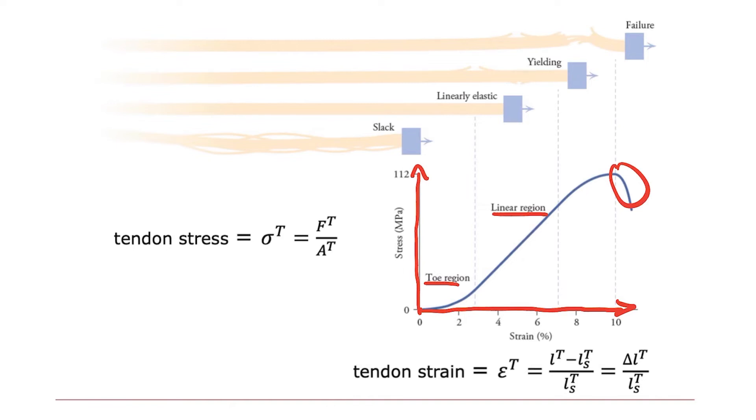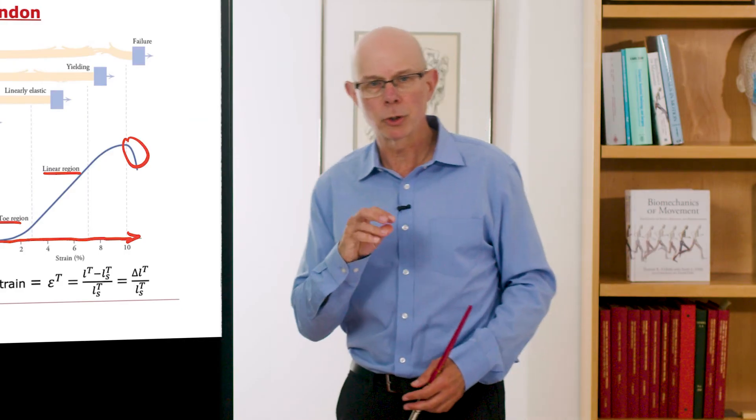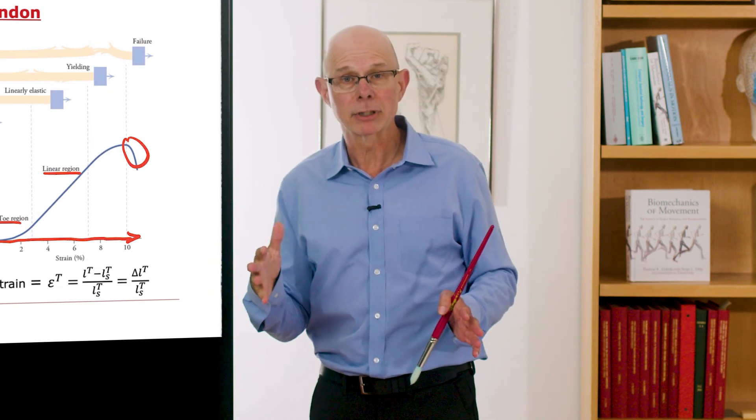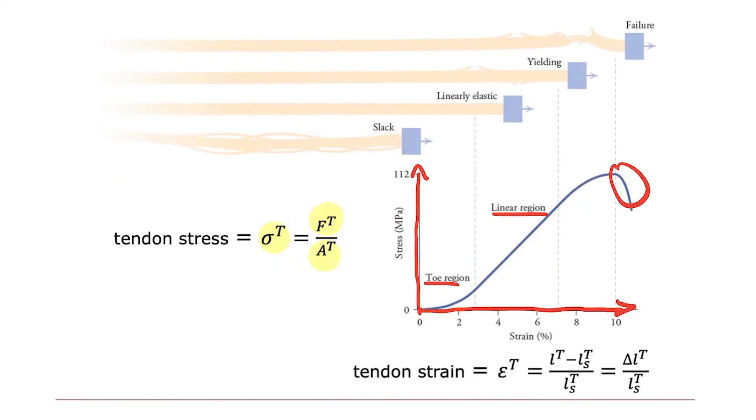A couple key relationships, one is the stress in tendon that I'm showing here is stress in tendon is the force in tendon divided by the area of tendon. So we're assuming that the stress is uniform across the area of a tendon, so we can just divide the total force in tendon by the area. Tendon strain is the stretch of tendon, so the length of tendon minus its slack length divided by the slack length. Here's the stretch in tendon divided by the tendon slack length.